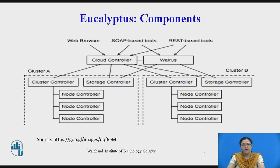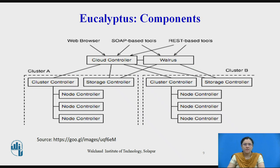The VMware Broker is an optional component that provides an AWS-compatible interface for VMware environments and physically runs on the Cluster Controller. The VMware Broker mediates interaction between the Cluster Controller and VMware and can connect directly to either ESX hosts or vCenter servers. The Node Controller hosts the virtual machine instances and manages the virtual network endpoints. It downloads and caches images from Walrus as well as creates and caches instances. This covers all the components of Eucalyptus.